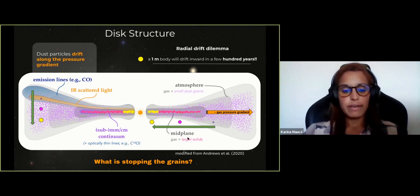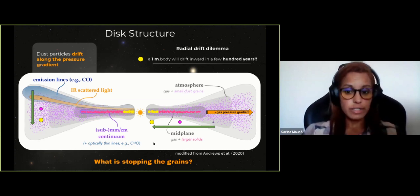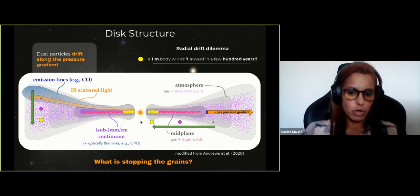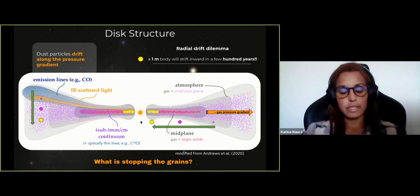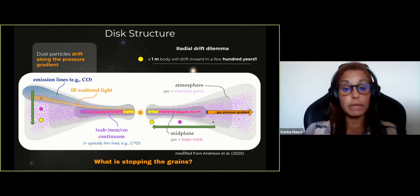A problem we have been realizing over recent decades is that radial drift is actually very efficient — a one-meter body will drift inward in just a few hundred years. But we know that planets form; we observe exoplanetary systems routinely now. So there must be some mechanism that stops grains in order for them to grow.